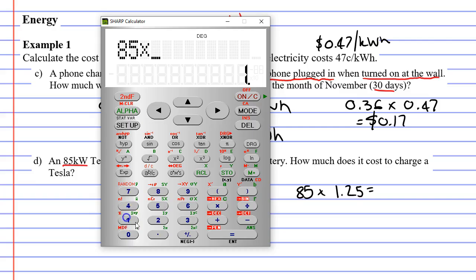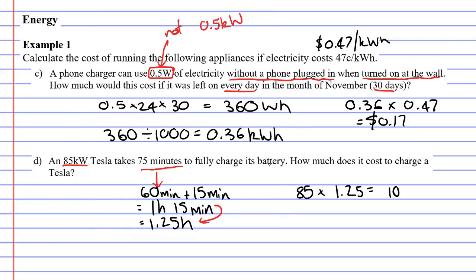85 times 1.25 equals, and you get 106.25. So 106.25 kilowatt hours. Now we take our kilowatt hours, 106.25,